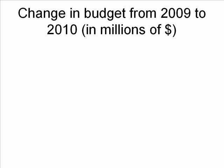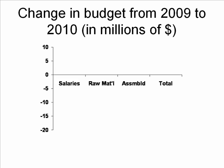Let's talk about the change in our budget from 2009, the current year, to next year 2010. All of these figures are in millions of dollars. There are three components we want to talk about: salaries, raw material costs, and assembled parts costs.